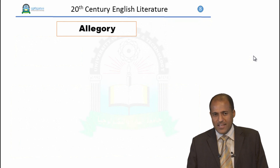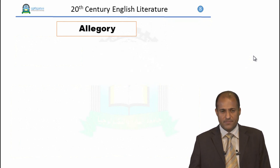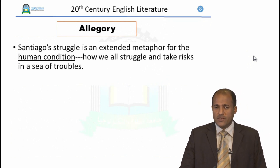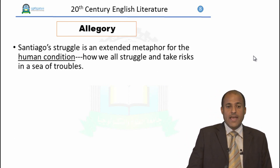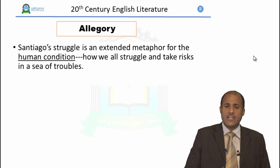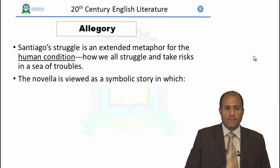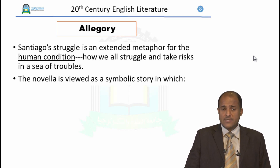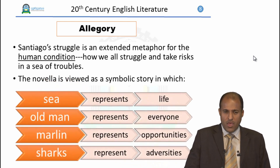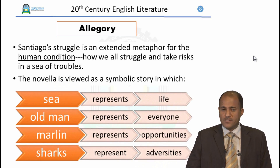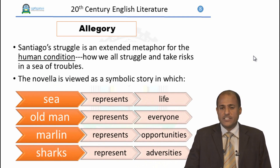We will now move on to allegory, which means symbolic story. Santiago's struggle is an extended metaphor for the human condition — how we all struggle and take risks in a sea of troubles. The novel is viewed as a symbolic story in which the sea represents life, the old man represents every one of us, the marlin represents opportunities, and the sharks represent adversities.